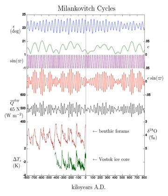Smaller contributions are also made by the Sun's oblateness and by the effects of general relativity, well known for Mercury. Apsidal precession combines with the 25,771.5-year cycle of axial precession to vary the position in the year that the Earth reaches perihelion.